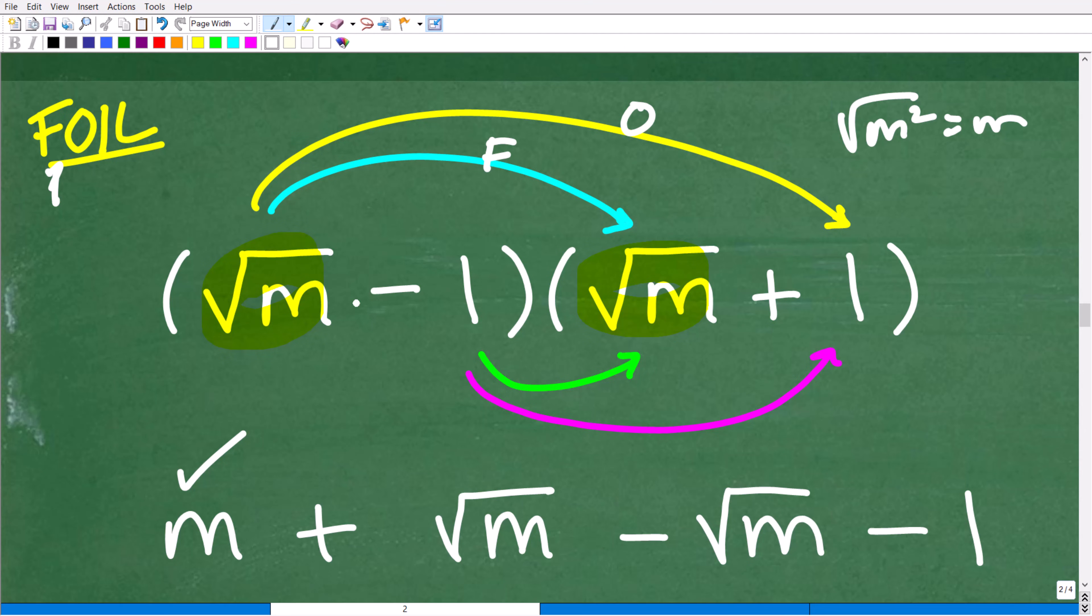So the outer is these terms. This is our outer. So it's the outer terms of the two binomials. So the square root of m times 1 is the square root of m, the positive square root of m. And now that's our O. Our I is our inner. So this is negative. Now negative 1 times the square root of m. So that would be negative square root of m.